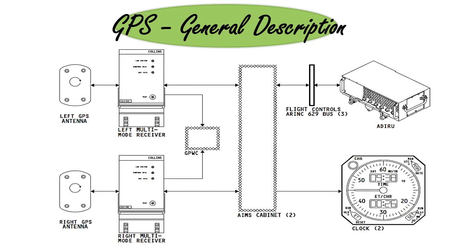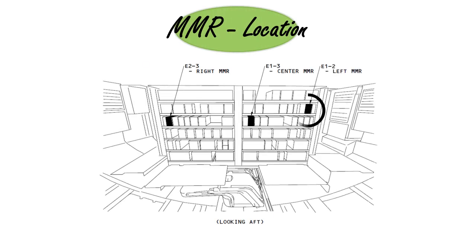This is the schematic diagram of a GPS system in the Boeing 777. The multi-mode receiver, also called the MMR, is the heart of the GPS system. The left MMR is located in the E1-2 shelf, the center MMR is on the E1-3 shelf, and the right MMR is on the E2-3 shelf.